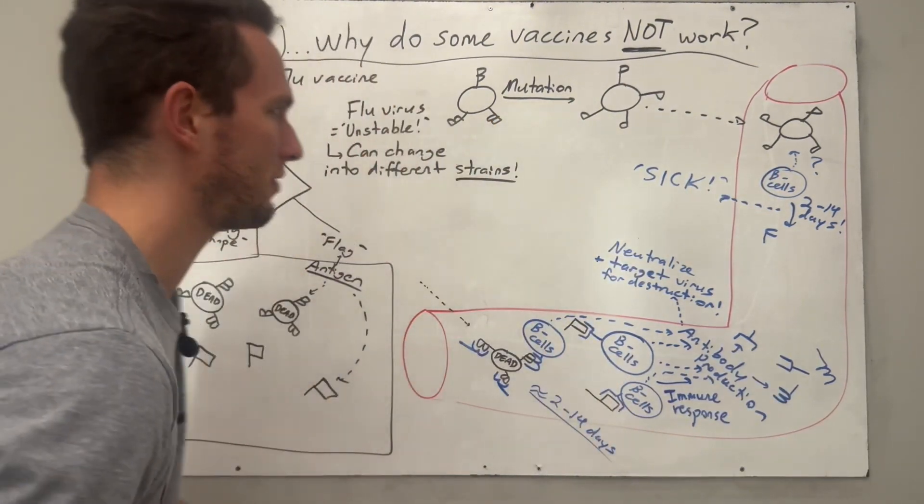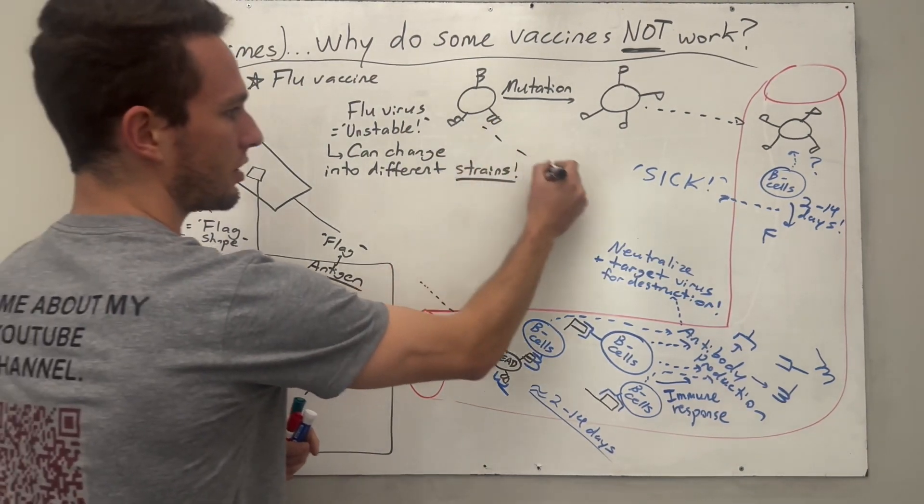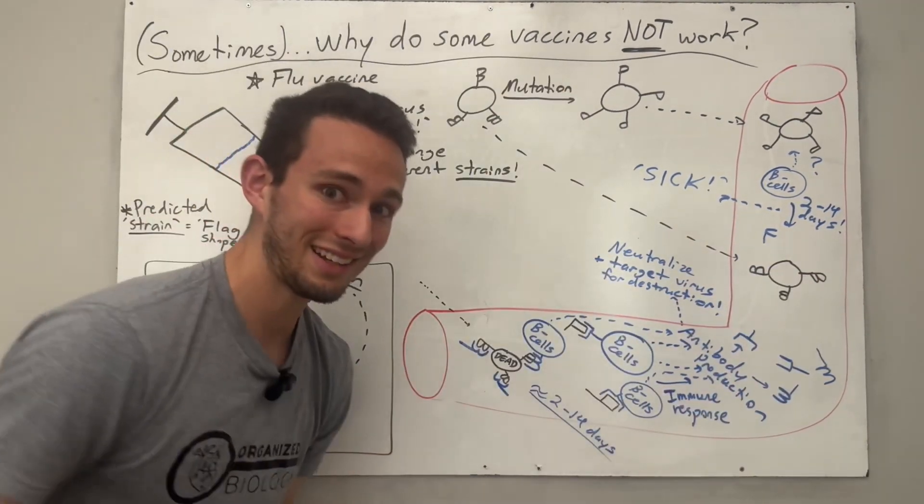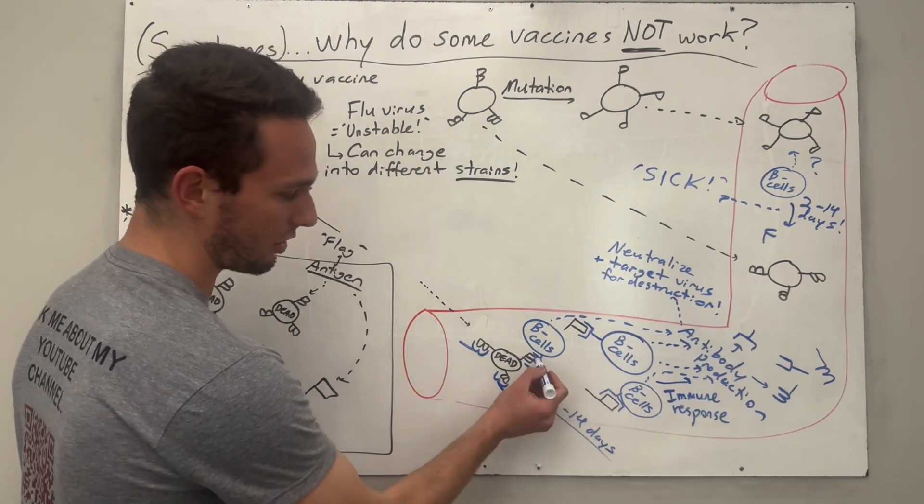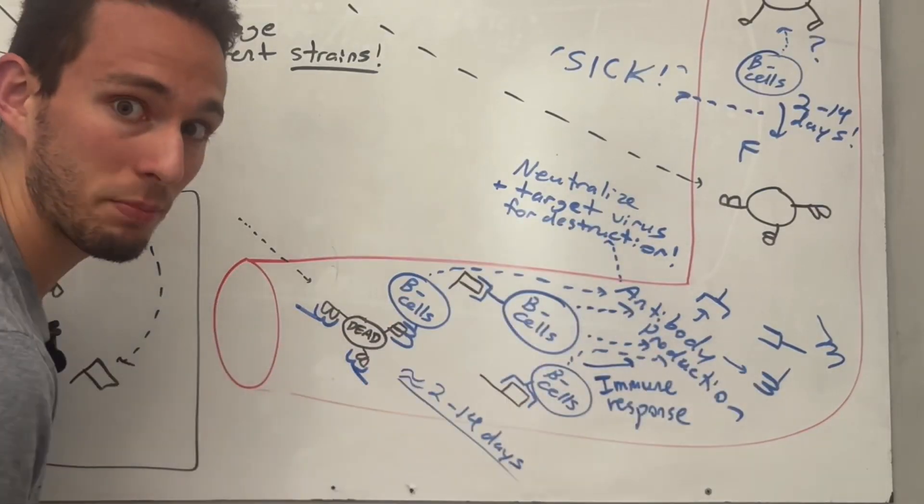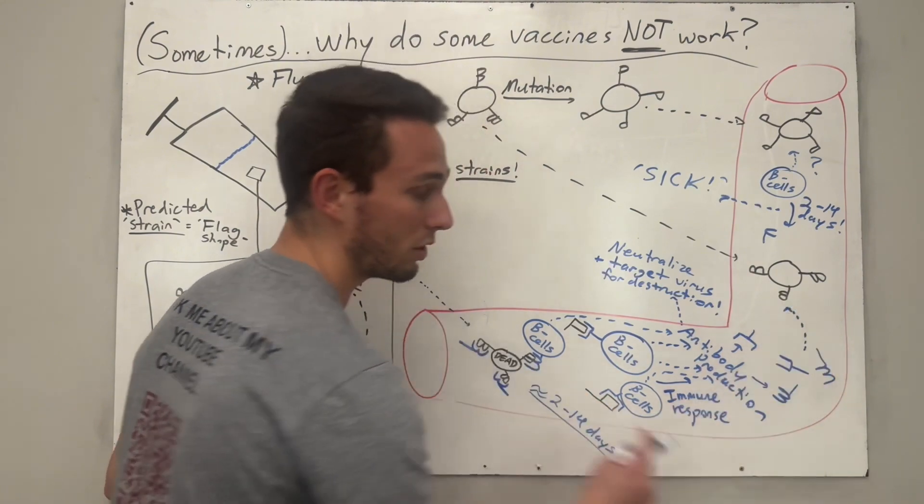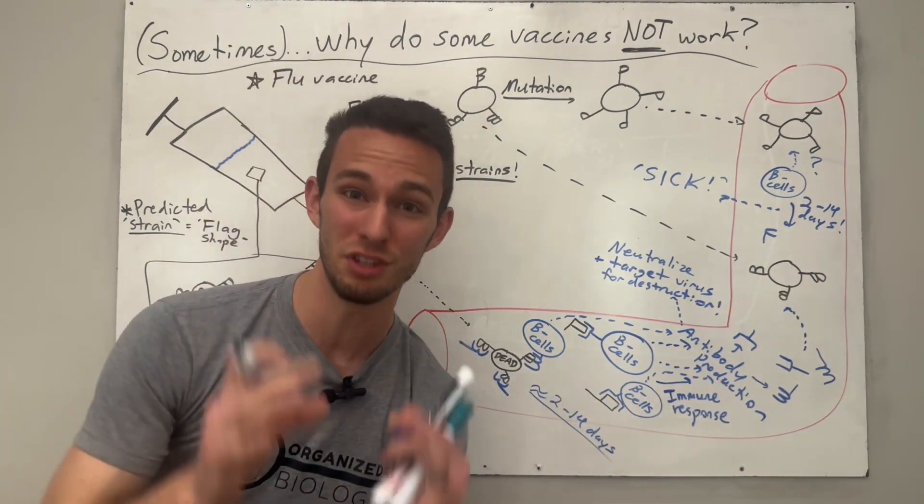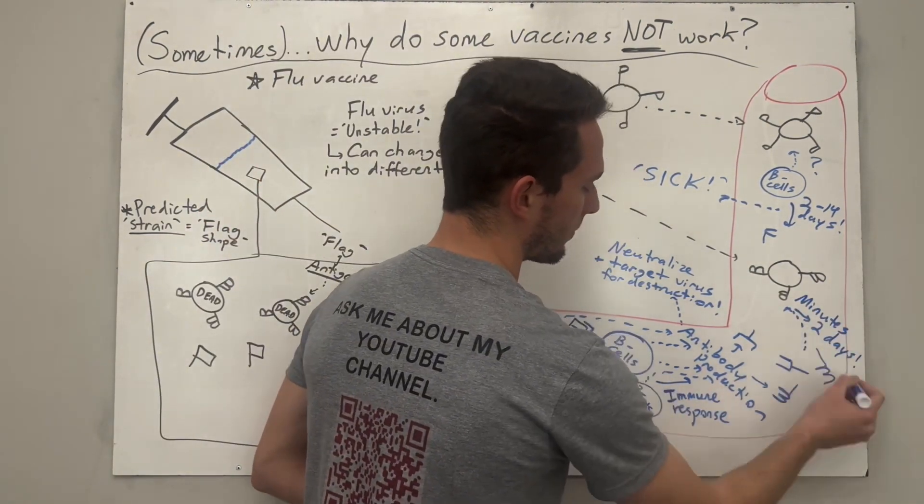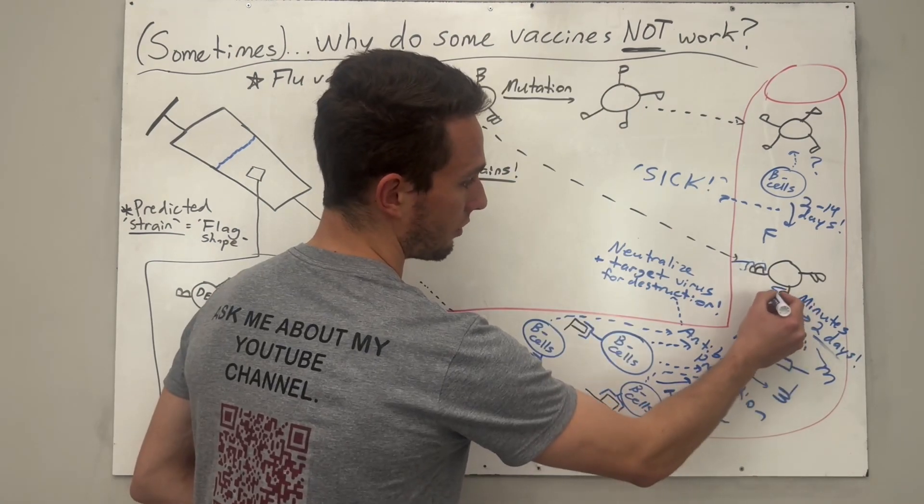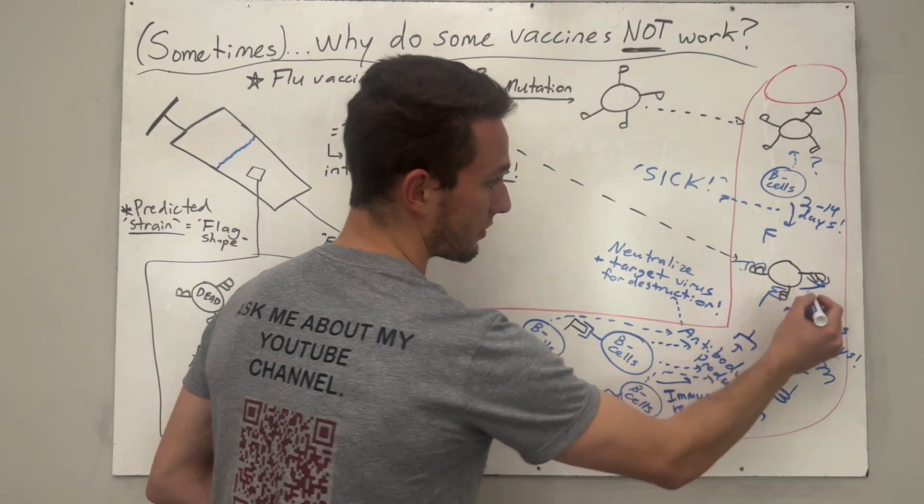But let's say you do get infected with that strain that looks like this. Well in that case, you've already stimulated these B cells to learn how to make those antibodies that attach perfectly. So in that case, this process of actually neutralizing these guys will literally only take minutes to a few days.